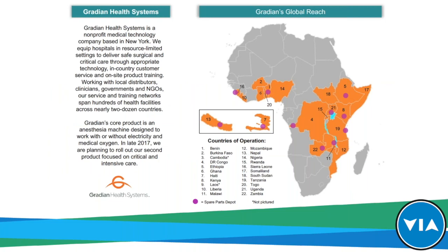That's the overview of the machine. A little bit about Gradient Health Systems: we are a non-profit medical device company. We sell our machine at cost, and any profits or income we get are put into service and training. We are highly focused on service and training for each machine. We're based in New York, and our real mission is to improve surgery through technology, training, and service. We're currently in 22 countries, about to go into 23. We've been around since 2011, with most of our presence in East and West Africa, plus bases in Nepal, Haiti, Cambodia, and Laos.